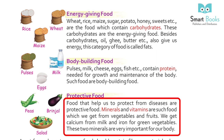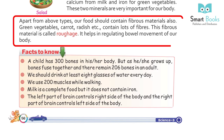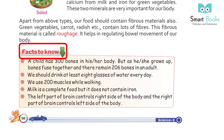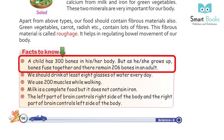These two minerals are very important for our body. Apart from the above types, our food should also contain fibrous materials. Green vegetables, carrot, and radish contain lots of fiber. This fibrous material is called roughage, and it helps in regulating bowel movement of our body.